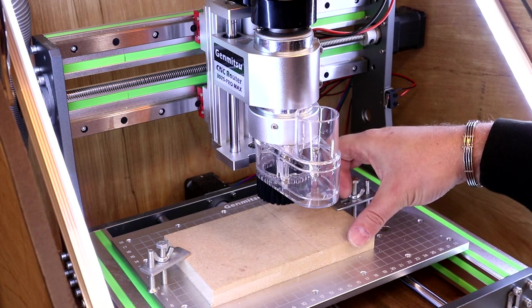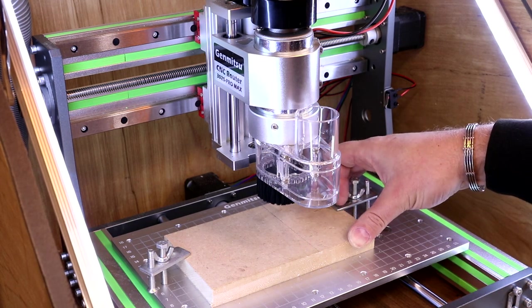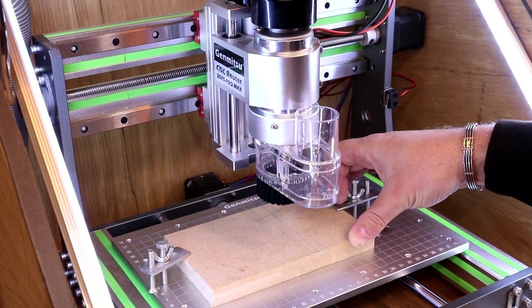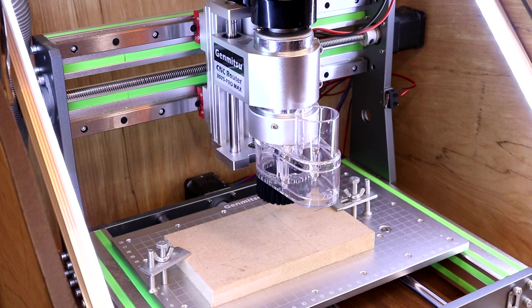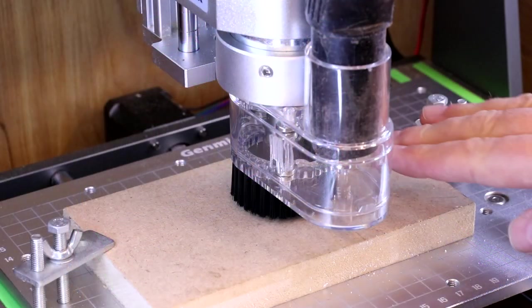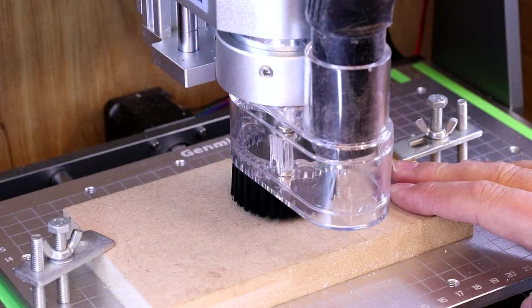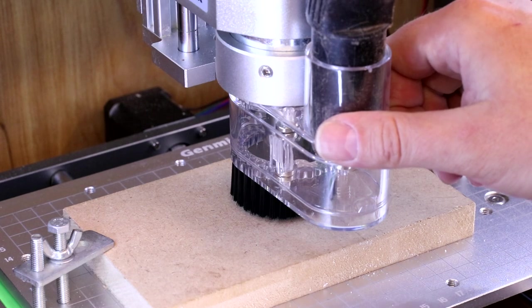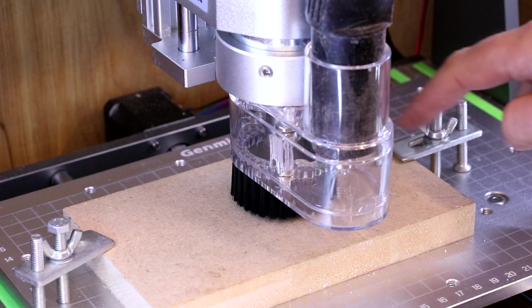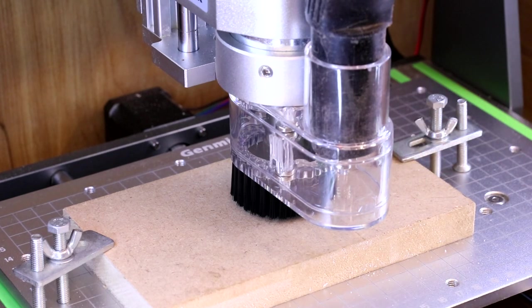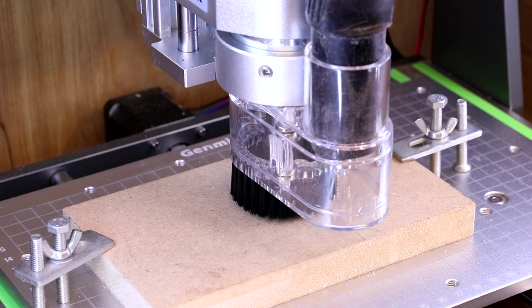Let's do a quick test. I've deliberately used MDF because it's quite fibrous and a messy material when you're using the CNC with it, so it should give us a good indication of just how much dust this is going to extract. The bit is just touching the top of the material. We've reset the zero, we've got the vacuum hose in place. Let's turn it all on and start the job.